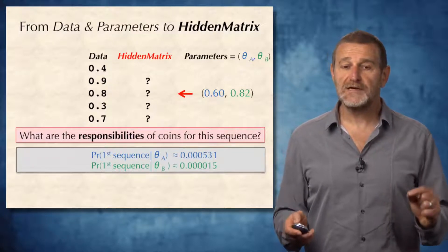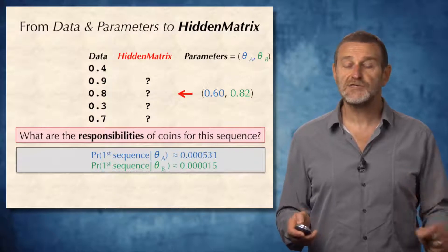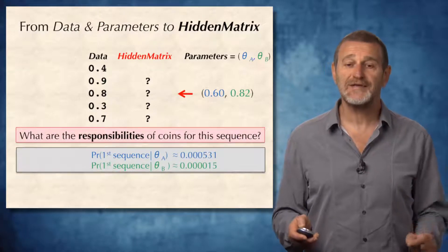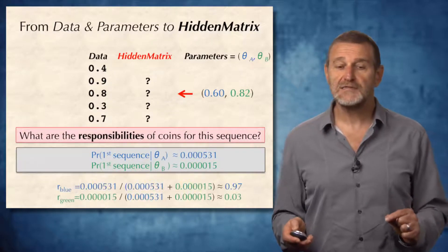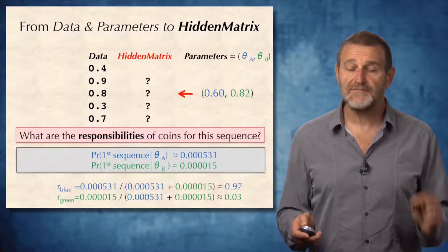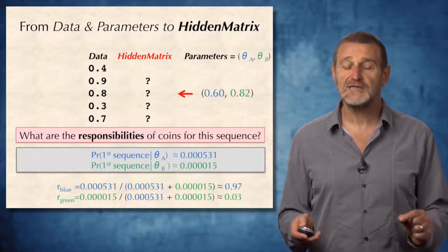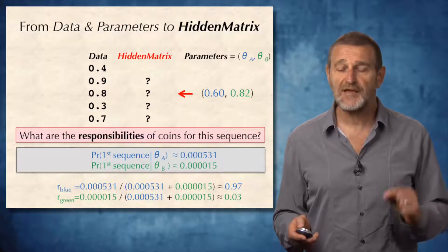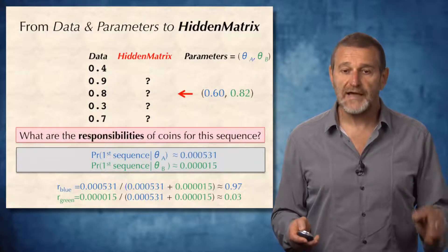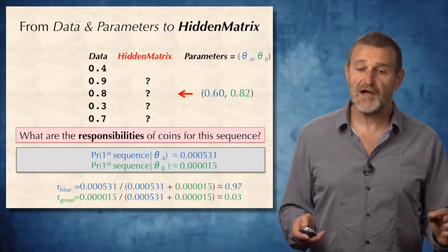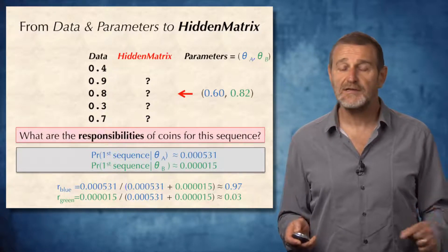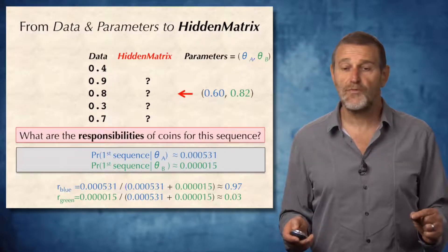The probability of this sequence being generated by the blue coin is 0.00531, but the probability of it being generated by the green coin is much smaller. So it makes sense to assign the responsibility of the blue coin as the probability of the blue coin divided by the sum of probabilities of the blue and green coins. Likewise, the responsibility of the green coin equals the probability of the green coin divided by the sum of probabilities of the green and blue coins. As a result, the responsibility of the blue coin for the first series of coin tosses is 0.97, and the responsibility of the green coin correspondingly is 0.03.